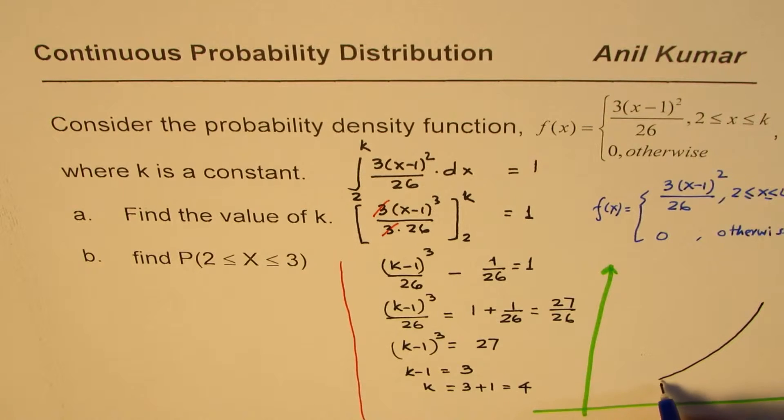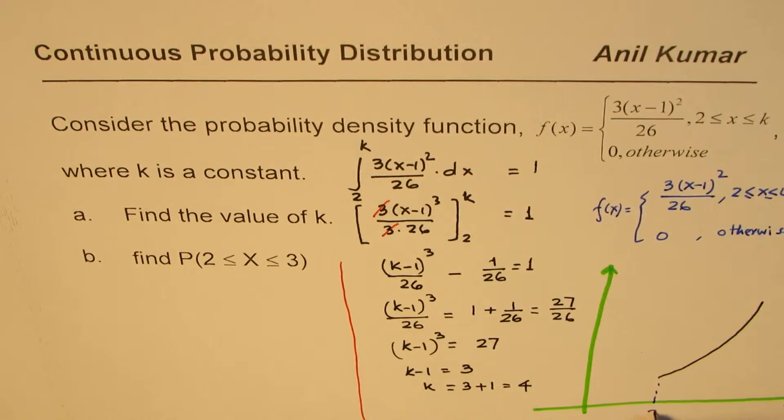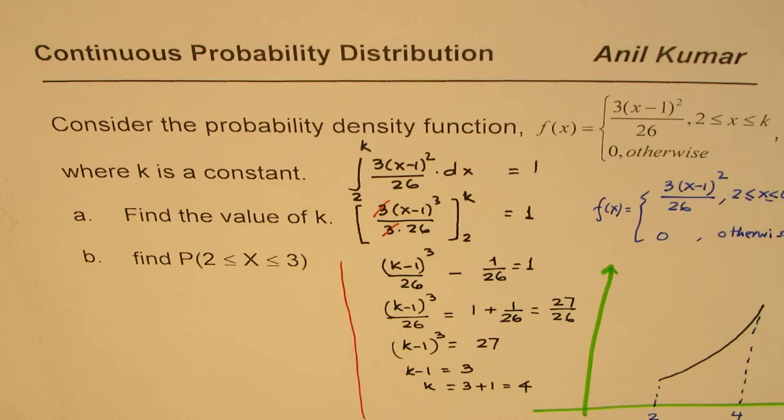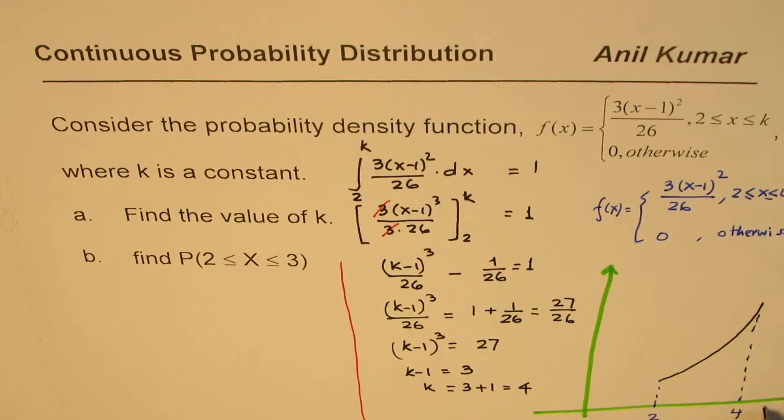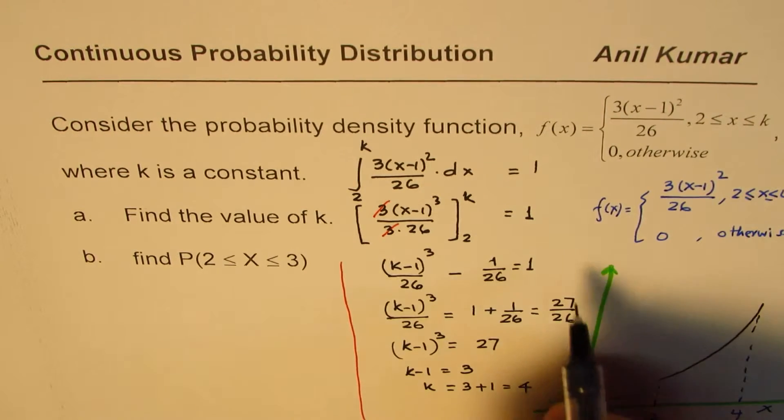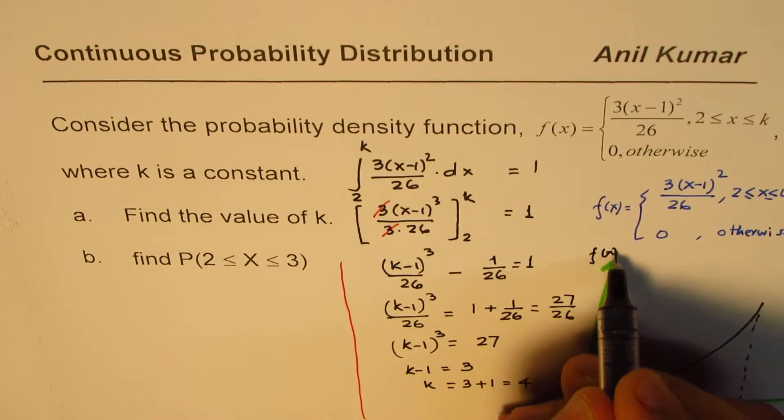So where this limit for us is 2, that is the lower value, and k value is 4 now for us. So that is the portion, that is how it is going to look like. Now here we have the values of random variable, and that is the probability distribution function.